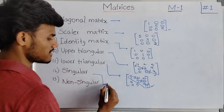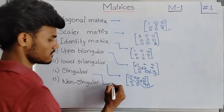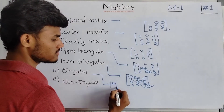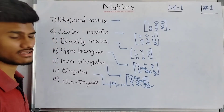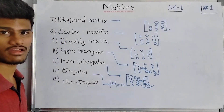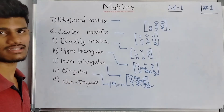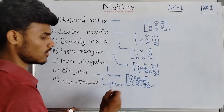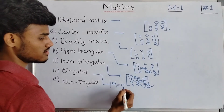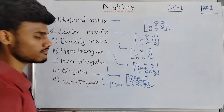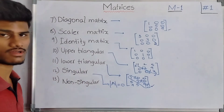Next, coming to singular matrix. What is meant by a singular matrix? When the determinant of A equals 0 — that is, det(A) = 0 — and the matrix satisfies this condition, then the matrix is said to be a singular matrix. The determinant of A must be equal to 0 for matrix A to be a singular matrix.